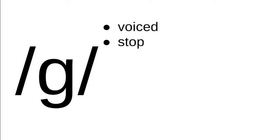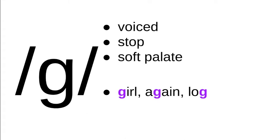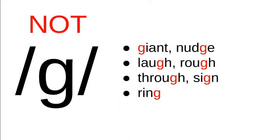The next sound is the G sound, represented in IPA by a lowercase g. This sound is voiced, it's a stop, and it's made at the soft palate — like K except voiced. In English it's always spelled with a G, as in 'girl,' 'again,' and 'log,' and sometimes we add an extra H as in 'ghost.' However, G doesn't always represent this sound: in 'giant' and 'nudge' it represents the affricate from the last video; in 'laugh' and 'rough' GH represents an F sound; and in 'through' and 'sign' it's silent.